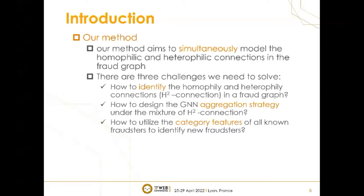Challenge 3: How to utilize the category features of known fraudsters to identify new fraudsters. In practical applications, some fraudsters may be surrounded by many benign entity neighborhoods. These fraudsters can only obtain dissimilar information from benign neighbors, but lack information of similarity from other fraudsters. So we aim to capture the category features to help reveal the suspiciousness of a central node.